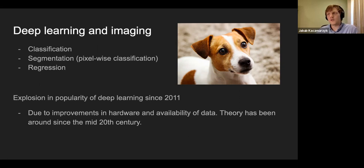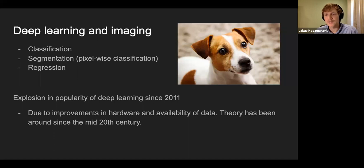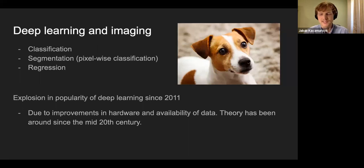A lot of us are familiar with deep learning now, and its popularity really exploded back in 2011. This was mostly due to improvements in hardware and the availability of data — these models take lots of data to train, as Professor Richards noted. The theory for these things has been around since the mid-20th century.